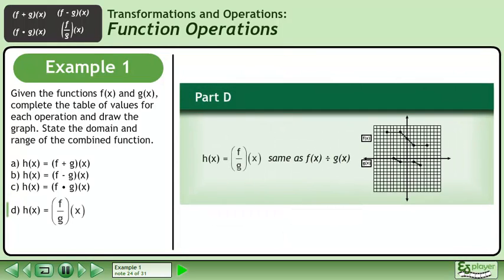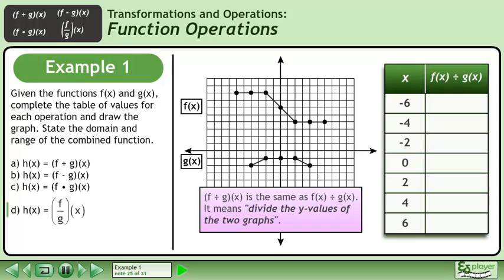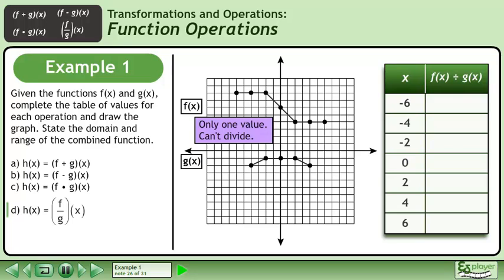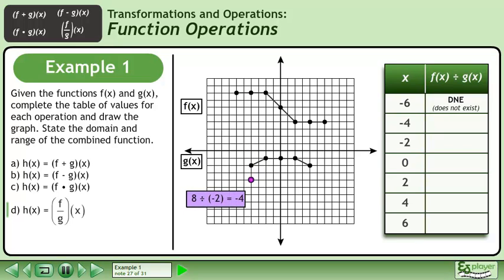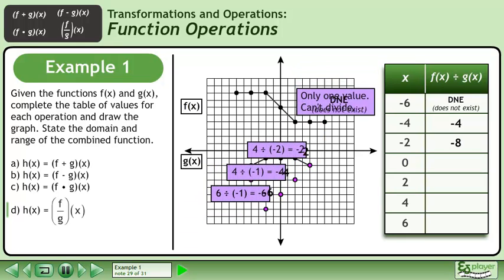In part d, we'll draw the graph of h equals f divided by g. f divided by g means divide the y-values of the two graphs. The first point only exists on one of the graphs, so we can't divide. Record this in the table as does not exist. Divide the y-values of the next point to get negative 4, then the next point to get negative 8. Divide the y-values of the remaining points and record the quotients in the table.